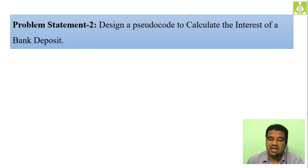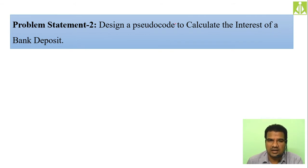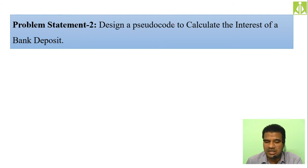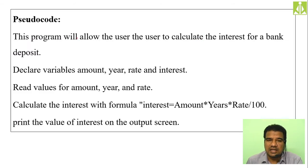You can easily change this pseudo code to find subtraction, multiplication, division, and modulo division. Write the pseudo code for all those operations in your running notes. The next problem: design a pseudo code to calculate the interest of a bank deposit — Interest = (Amount × Years × Rate) / 100. The first line of the pseudo code: 'This program will allow the user to calculate the interest for a bank deposit.'